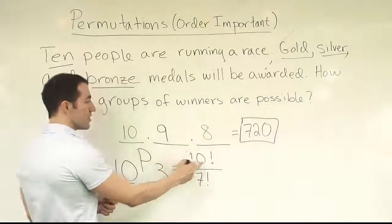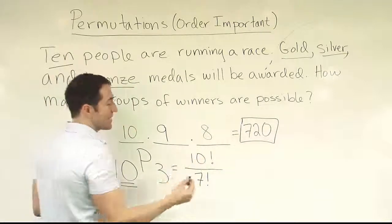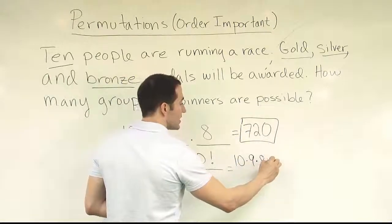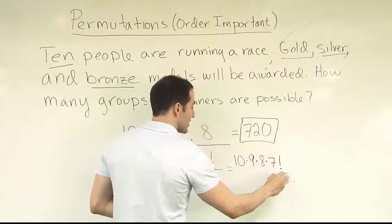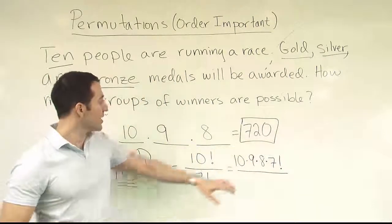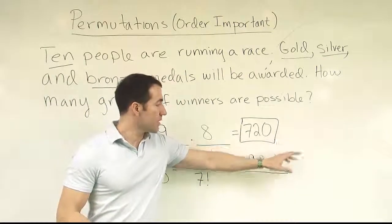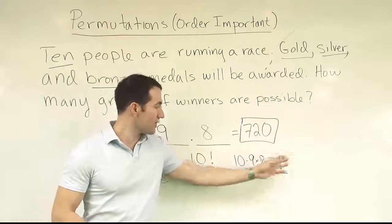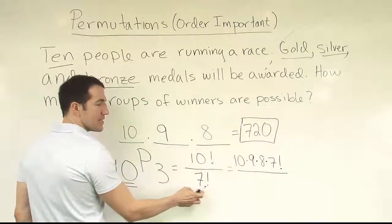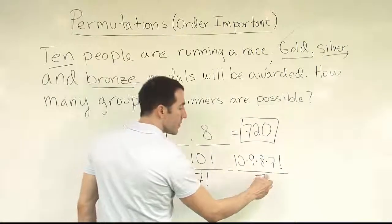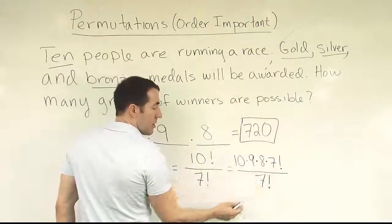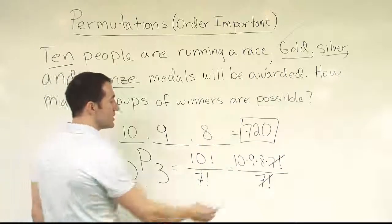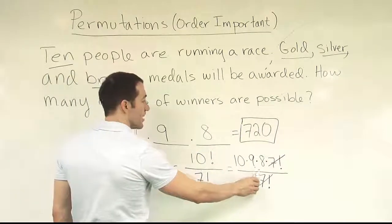To see why this equals our earlier answer, we expand the factorial: 10! means 10 × 9 × 8 × 7!, and since there's a 7! in the denominator, we can cancel it out. We're left with just 10 × 9 × 8, which is the same result we got using the fundamental counting rule.